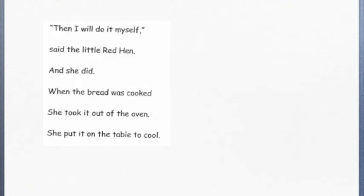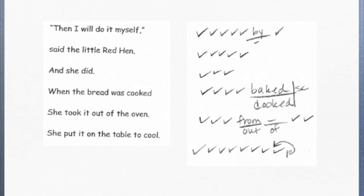In the next section, there was an insertion of by, and then there was baked for cooked, but it was self-corrected. The next one is kind of tricky because the child said from for the word out, but omitted the word of.